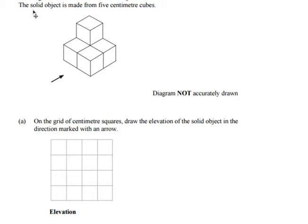This question is a typical exam question. The diagram shows a sketch of a solid object. The solid object is made from 5cm cubes. The diagram isn't drawn accurately. On the grid of cm squares, draw the elevation of the solid object in the direction marked with the arrow.